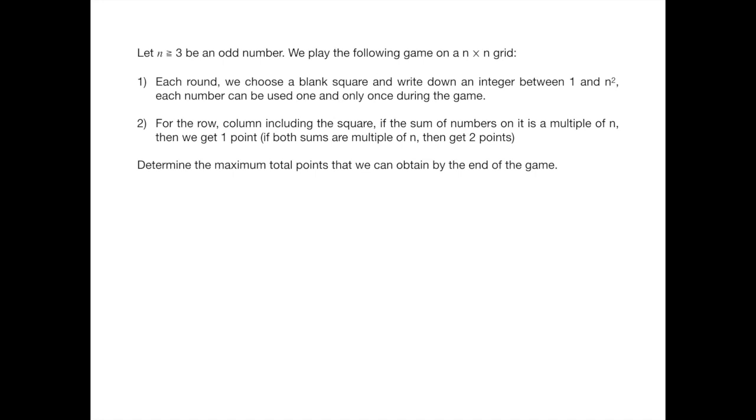After that we evaluate the sum along the row and the column that include this square. If any of this sum is a multiple of n then we get one point. If both of them are then we get two points. And then we go to the next round. So the question is to determine the maximum total points that we can obtain by the end of the game.